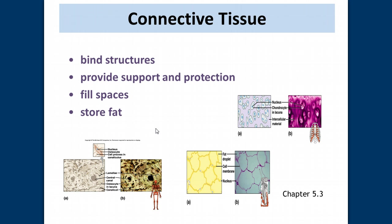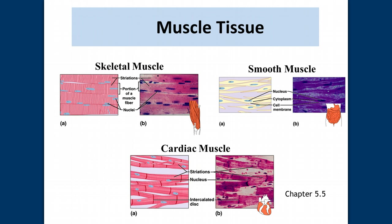Connective tissue binds structures, provides support and protection, fills spaces, and stores fat. Examples include loose connective tissue, adipose (fat) tissue, and dense connective tissue that forms ligaments. These adipocytes are fat-filled cells. Specialized connective tissues include cartilage, bone, and blood.